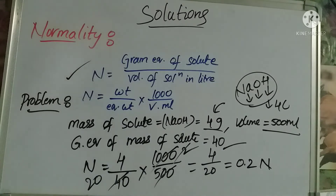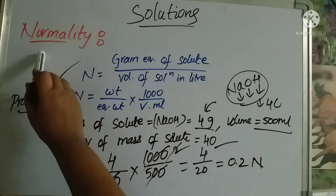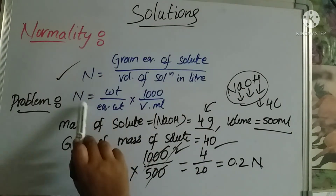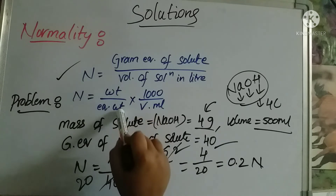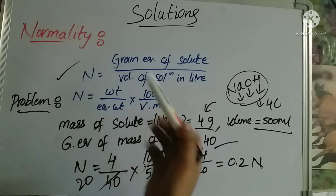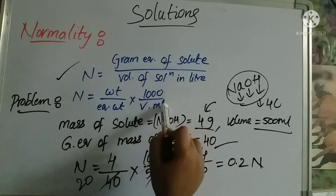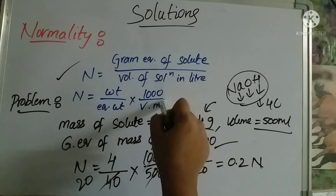So the normality formula is: N = weight / equivalent weight (or gram equivalent weight) × 1000 / volume. This is easy to apply — just substitute the given values.